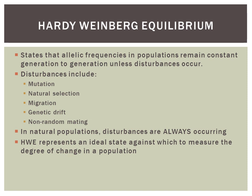Genetic drift is when a population gets shrunk down really, really small — something big happens, they lose their habitat, there's a catastrophic event, where you end up with just a few individuals. And then non-random mating is basically sexual selection, when individuals are choosing their mates because of some specific criteria.